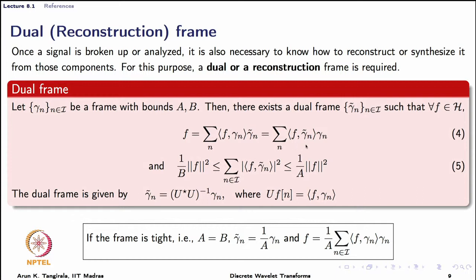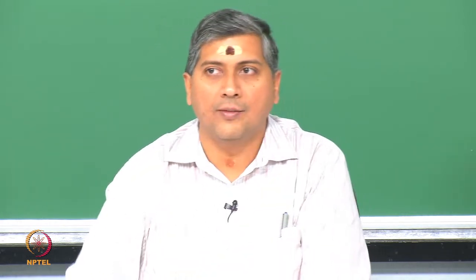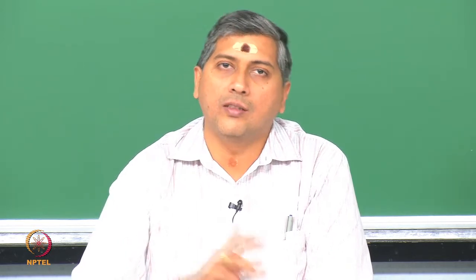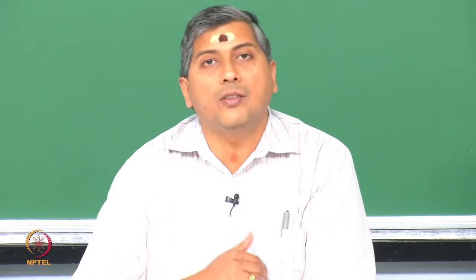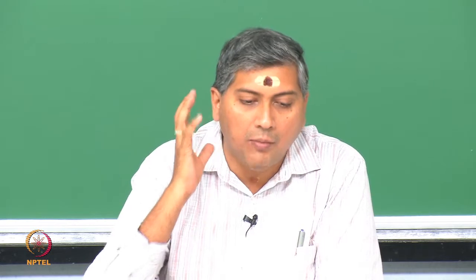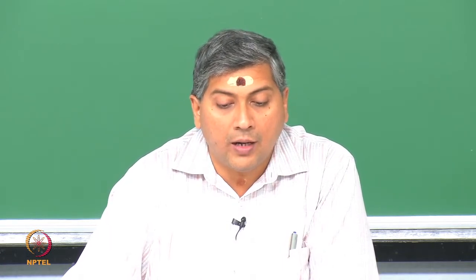Getting back to equation 4, what this tells me is that I could switch the roles of gamma-n and gamma-tilde. I can use gamma for analysis and gamma-tilde for synthesis, or I can use gamma-tilde for analysis and gamma for synthesis — either way I can switch the roles, they are just duals of each other. A frame is nothing but a collection of functions used for analyzing and recovering a signal.